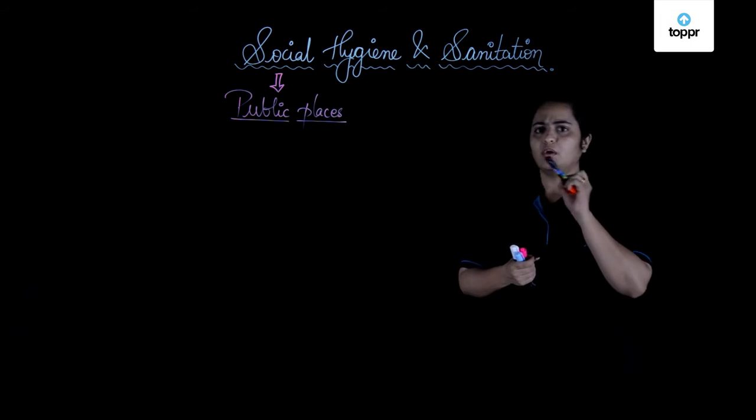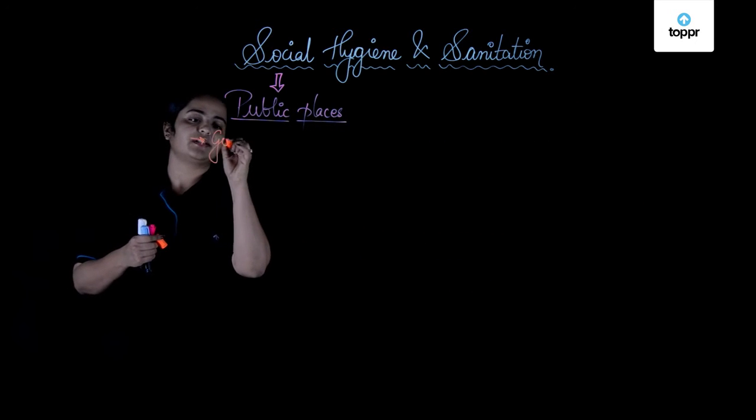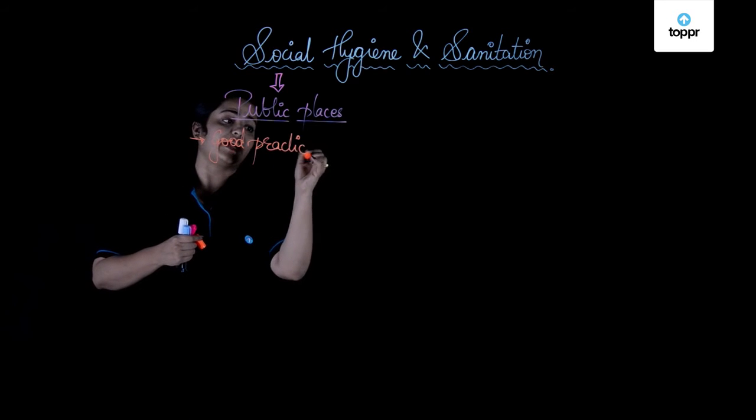At such places, what kinds of things are we supposed to do at our level, and what kinds of things are supposed to be done by the government? Because it's a common public place, we need to have good practices — like covering your mouth while coughing and sneezing, not spitting, not throwing water, not washing hands on the road. That is about good habits or good practices at the personal level.